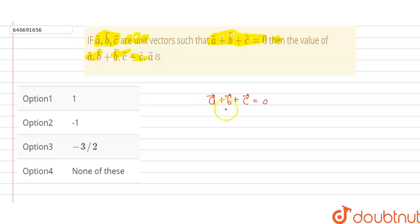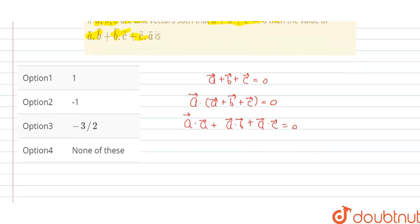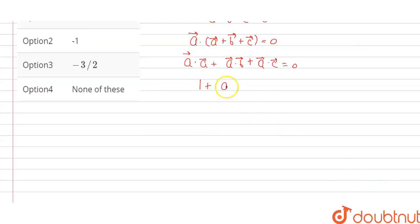What we will do is we will take dot product with a on both sides. So we will get a dot (a plus b plus c) is equal to zero. By expanding, we get a·a plus a·b plus a·c equal to zero, which can be written as 1 plus a·b plus a·c equal to zero. So this is our equation one.